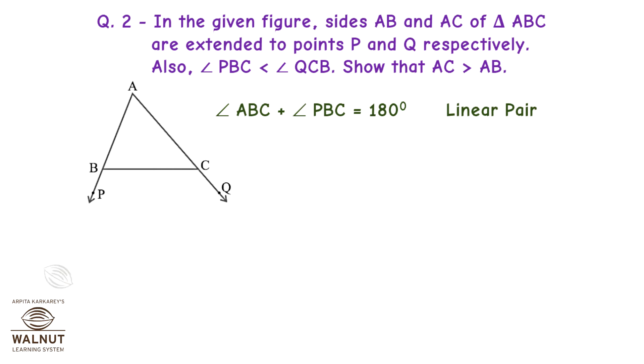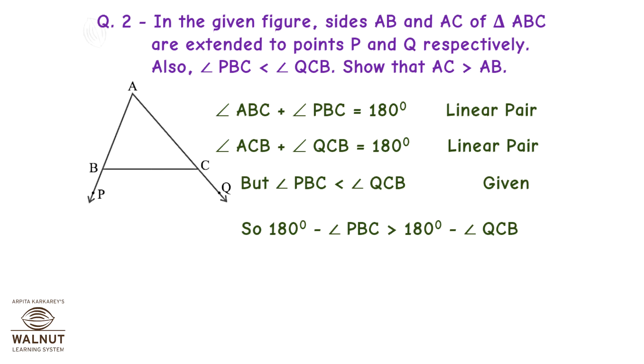Angle ABC plus angle PBC is equal to 180 degrees. It's a linear pair. Angle ACB plus angle QCB is equal to 180 degrees. Again, a linear pair. But angle PBC is less than angle QCB given. So, 180 degrees minus angle PBC is greater than 180 degrees minus angle QCB. Therefore, angle ABC is greater than angle ACB. Therefore, AC is greater than AB. Proved! Side opposite to larger angle is larger or greater. Done!